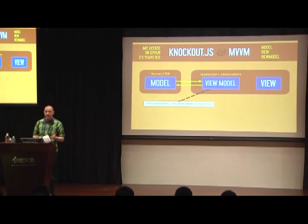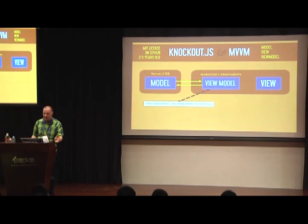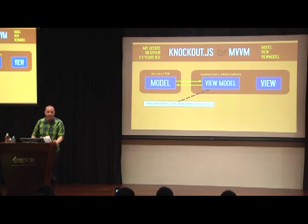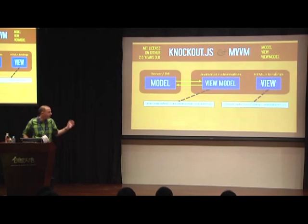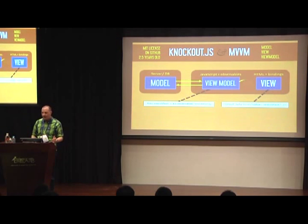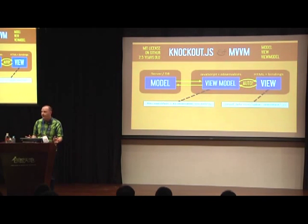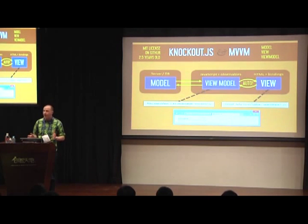To give you an example: say you want a user interface with a search field. You'll have a property on your view model called something like searchText. If you mark it as an observable, Knockout can track whenever it changes and notify anyone else that depends on it. You link that to your view, which because this is web is written in HTML, using declarative bindings — the thing that links your view and view model together. You might bind the value of a text box to that searchText field, and Knockout automatically keeps them in sync: edit the text box and it changes your view model; change your view model and it changes the text box.